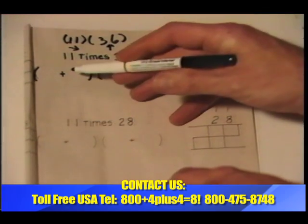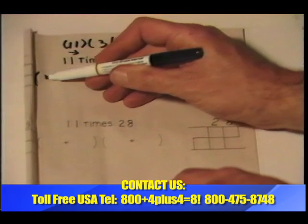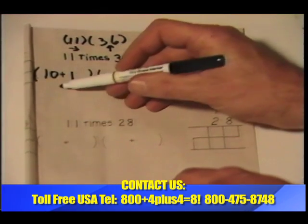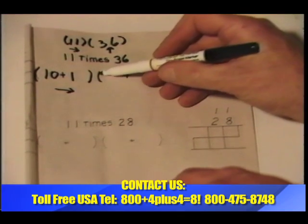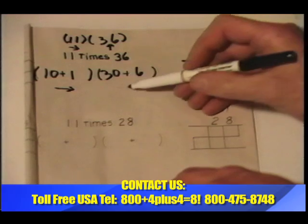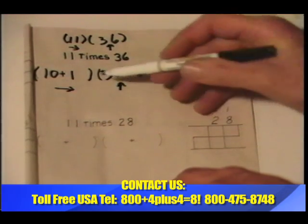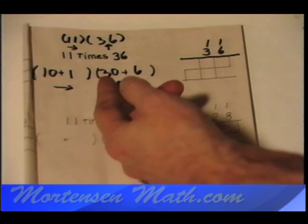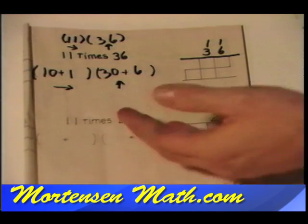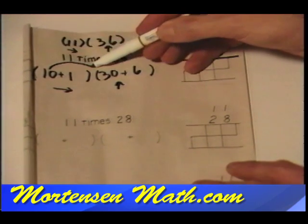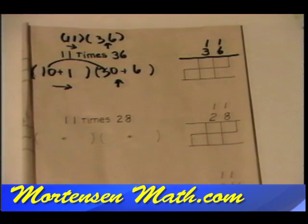We will write it longhand: 10 plus 1 over 30 plus 6 up. If we go over 10 and stop before going another 1, and go up 30 before we go another 6, that would be over 10 up 30, and we have identified our first piece.